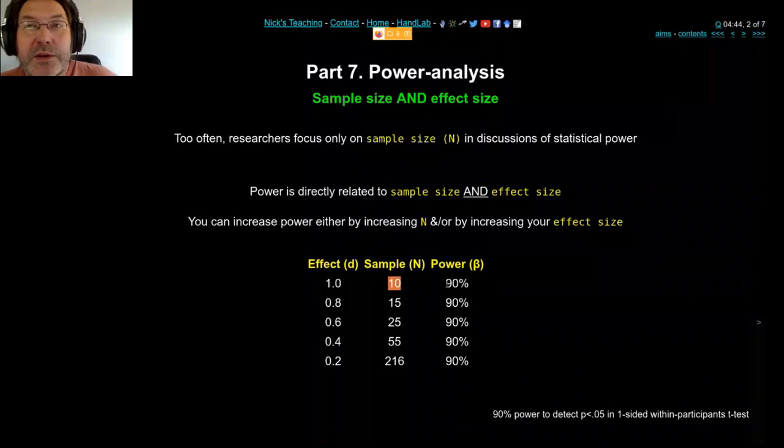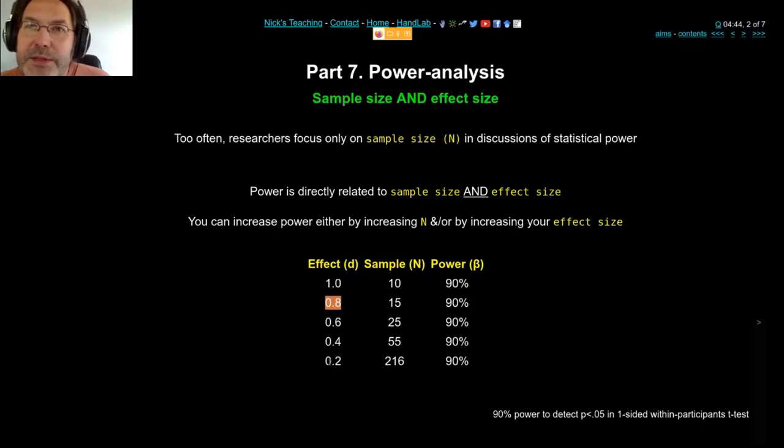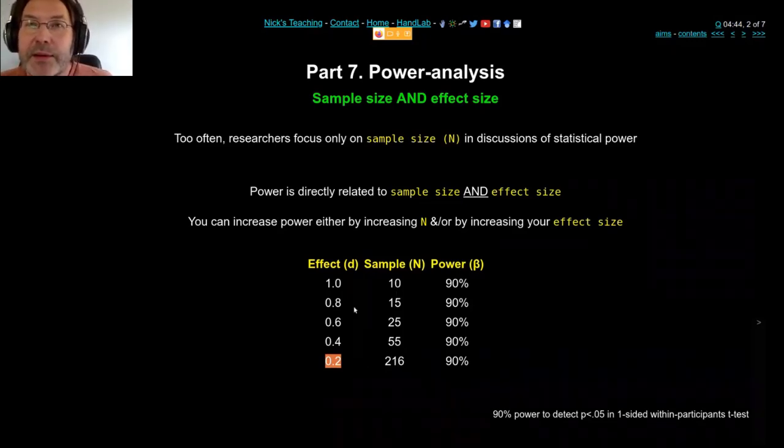So if you have a very well controlled study with very precise measurement and a very large effect size of Cohen's D 1, then you only need 10 data points to get 90% power. But as you decrease the power from one to 0.2, you've decreased that by five, the sample you now need has increased by 20 something. So if I decrease the effect size by five, I need 25 times more subjects or more data points.